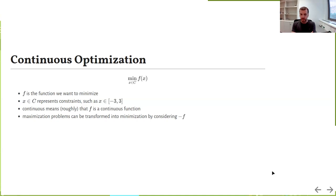Today we'll talk about continuous optimization. Continuous optimization is my main field of expertise. In particular, I will also talk about applications of continuous optimization for machine learning. The central problem of continuous optimization is to minimize a function. We have a function and sometimes we have a constraint — for instance, X belongs to some set C, like the interval from minus three to three.